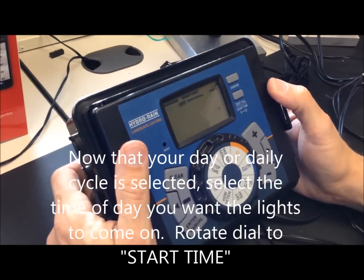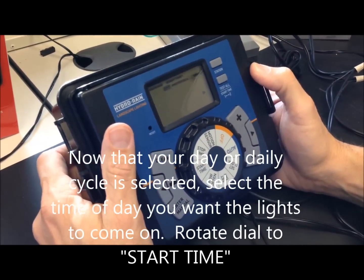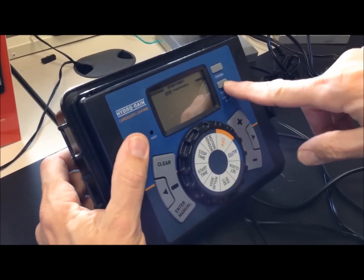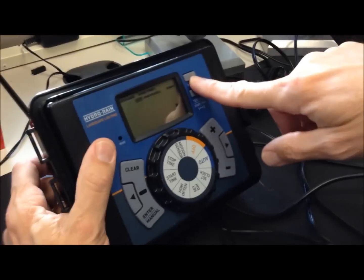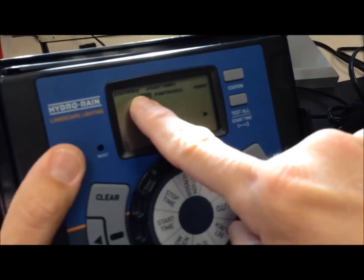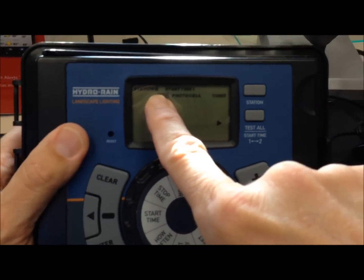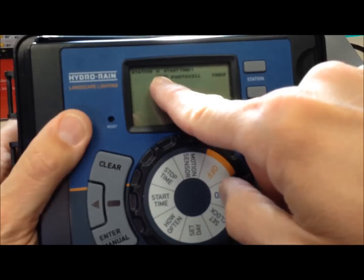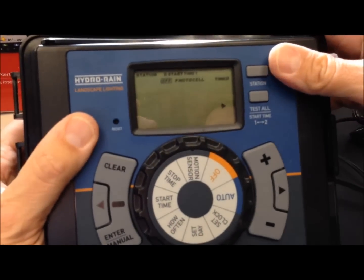Start time. You have the option of two start times. We have three stations. To toggle between stations, we have this station button here. You can see station is shown in your top left. We're on station one, there's station two, there's station three.